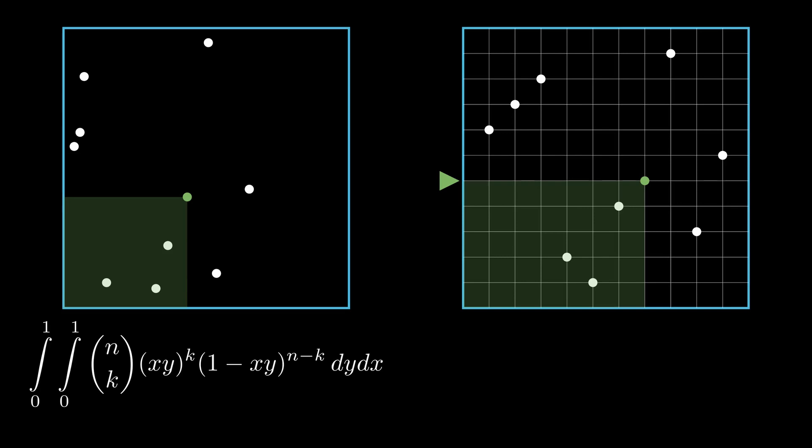Because the grid has n plus 1 rows, the probability of the green point landing on any given row is 1 by n plus 1. Now to accommodate k white points, the green point should land on any row greater than k. If it lies on any row j plus 1, there can be anything between 0 to j points in the green rectangular region with each count equally likely.